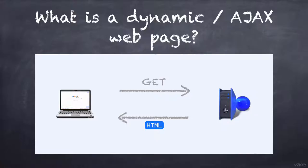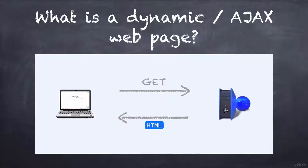Then it loads all the CSS, images and JavaScript files referenced in the HTML received from the server. At this point the data you may want to scrape is not loaded yet — it is not included in the HTML returned from the server so far. This is the main difference between a static web page and a dynamic web page.